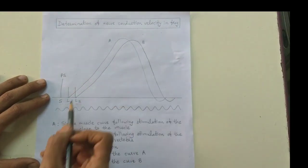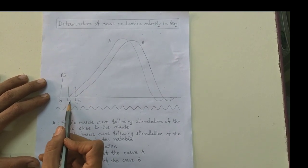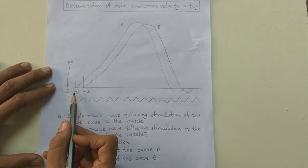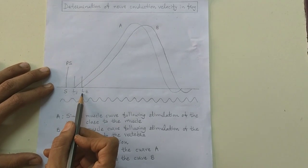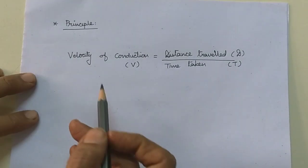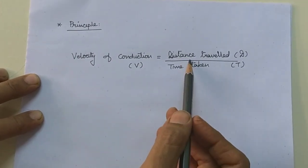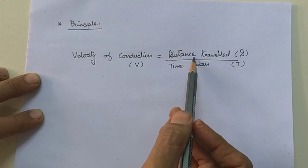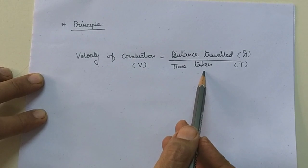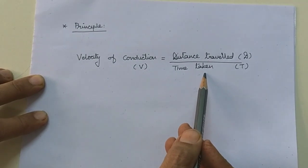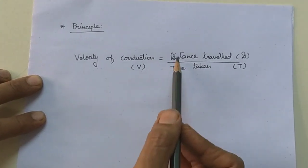You can see here, the difference between SL1 and SL2 is the difference of the latent period, or it is the time taken by the impulse to travel the distance between these two points. As we have discussed in the principle, the distance traveled is the distance between muscle end and the vertebral end of the nerve, and time taken is the difference of the latent period of two curves. We can calculate velocity of nerve conduction by these two values.